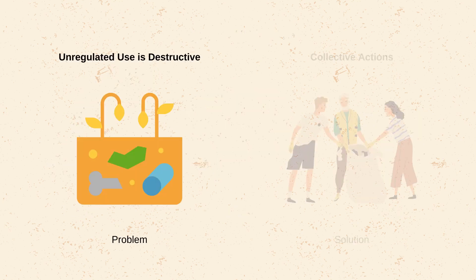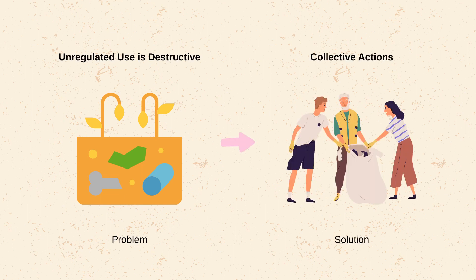The tragedy of the commons teaches us that unregulated use is destructive. If a resource is open to everyone without any limits, it's likely to be overexploited. This highlights the value of collective action. Solutions to this problem often involve forms of regulation, rules, social agreements, and a shift away from purely self-interested behavior.